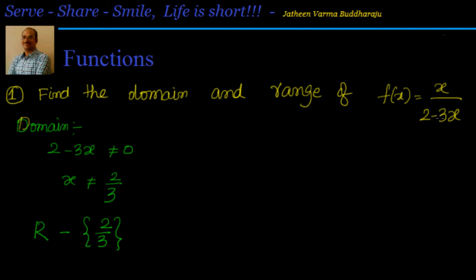Now it is interesting to find out the range. In situations where it is not straightforward, what we will do is take f(x) equal to y, so y = x / (2 - 3x). Then we will try to find x in terms of y, so that we can find the condition with respect to y which will allow us to define the values for x.